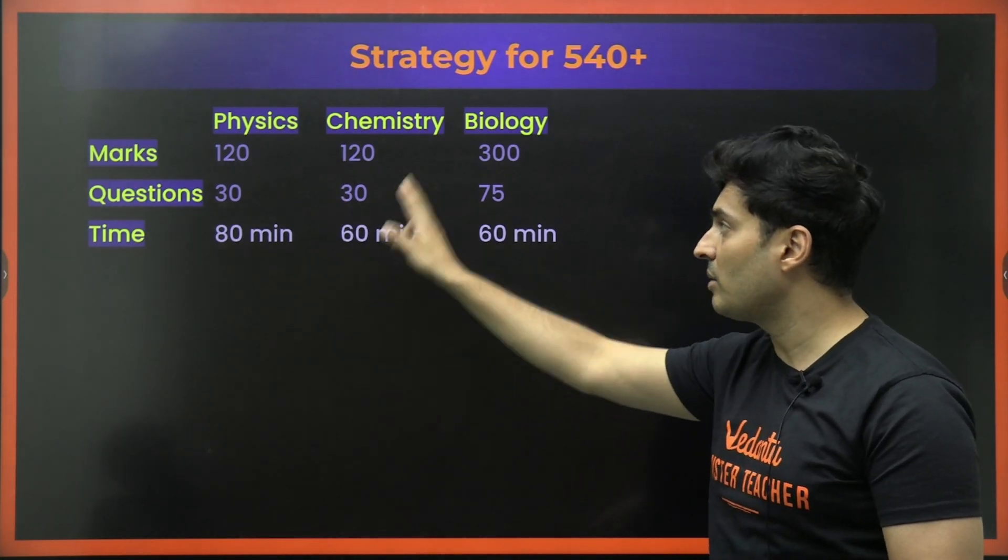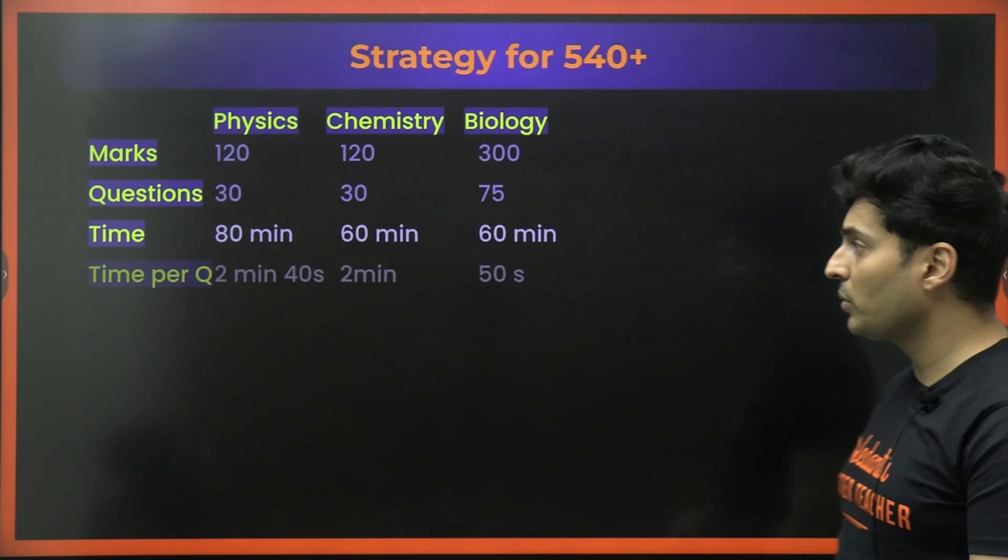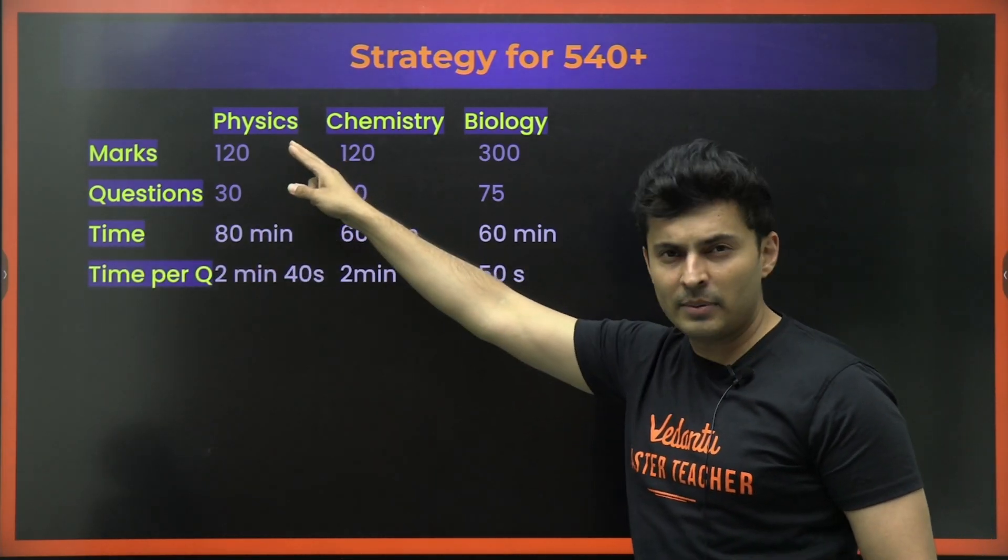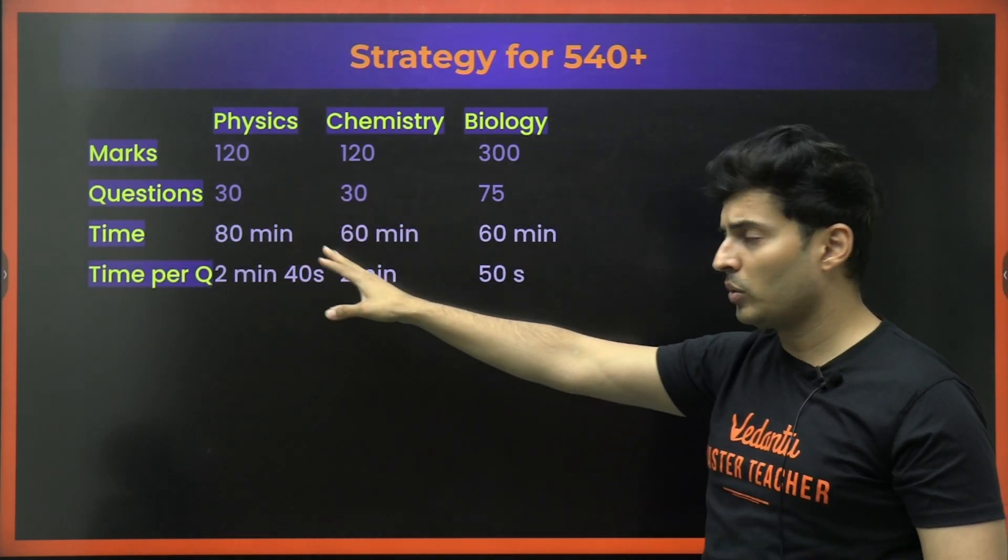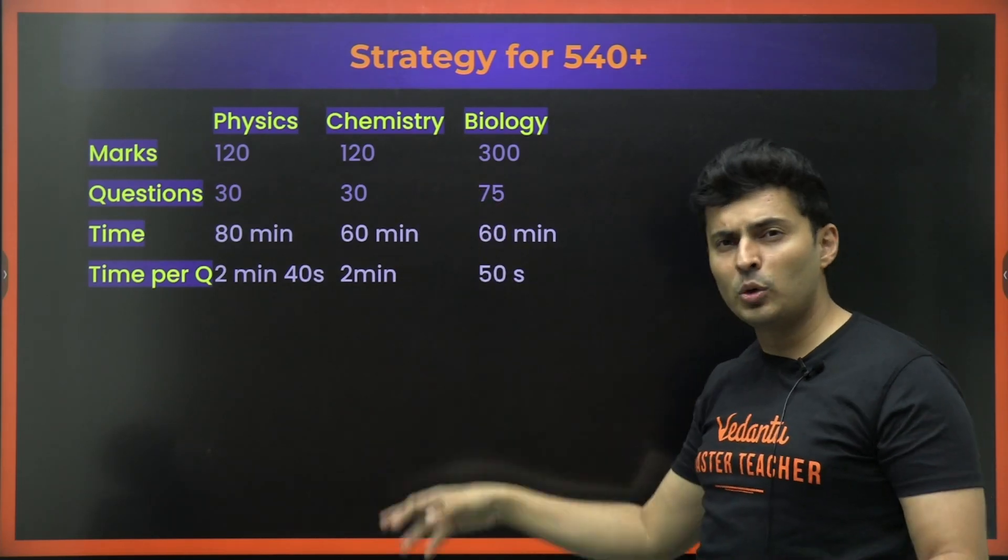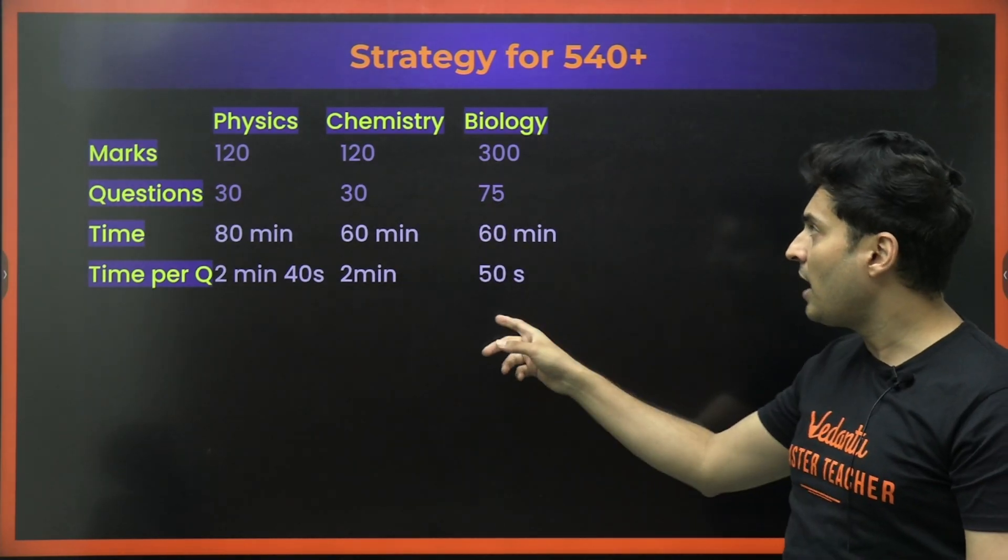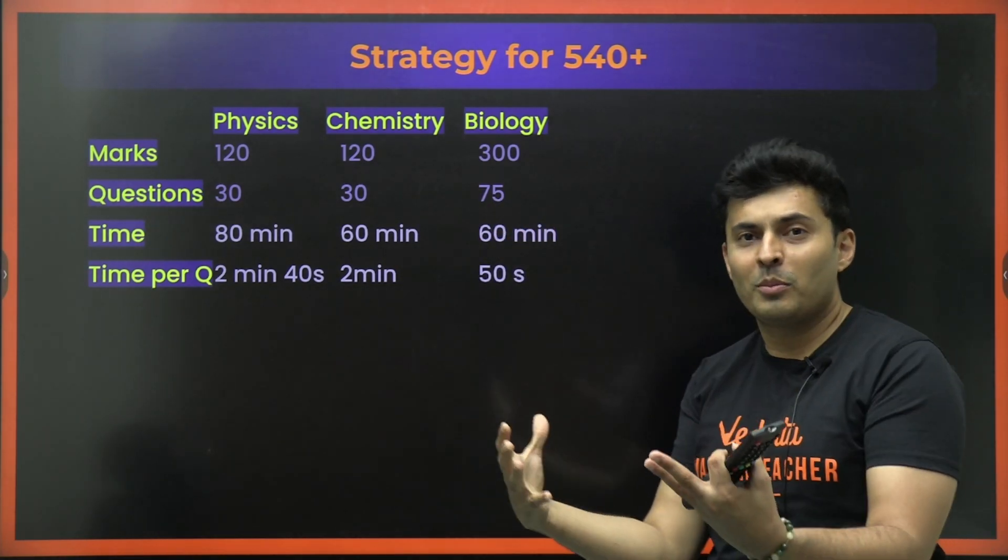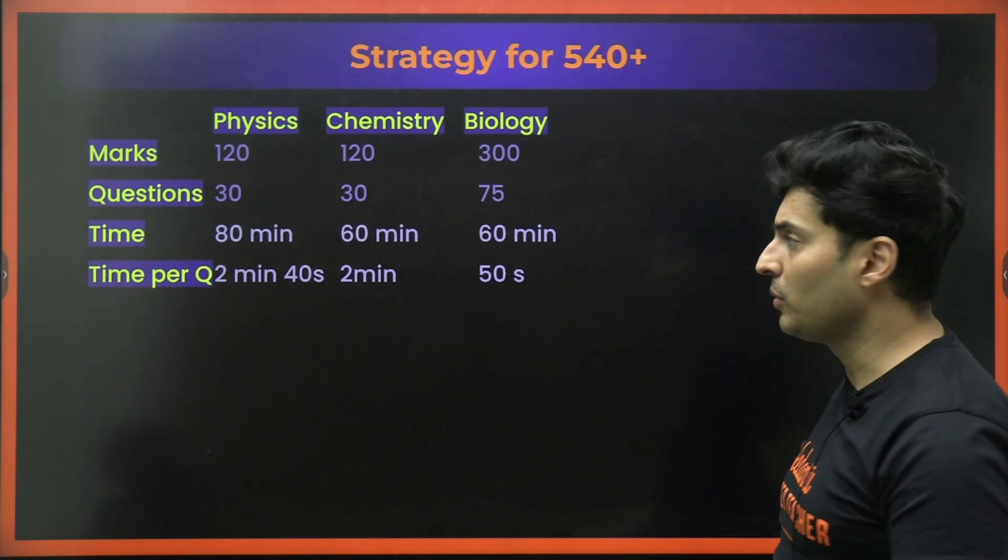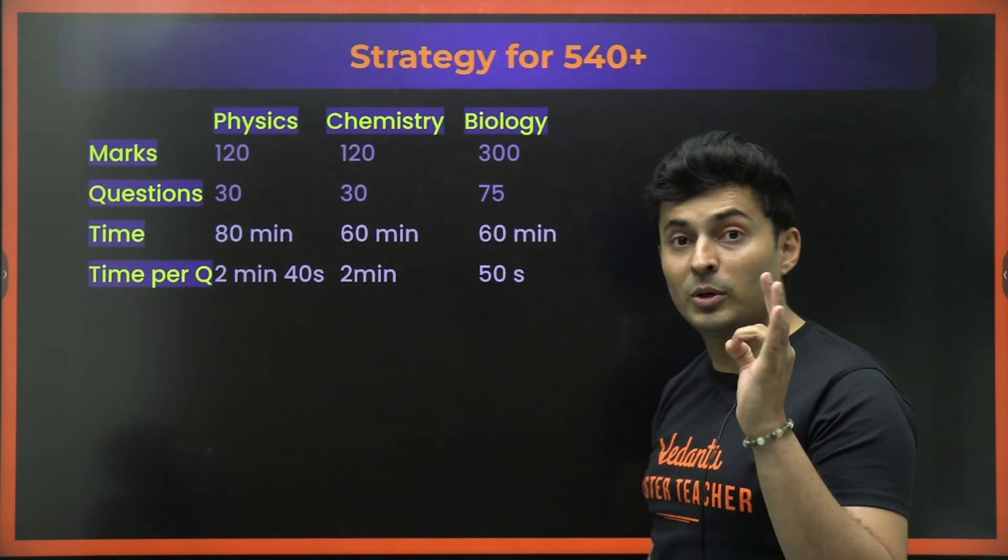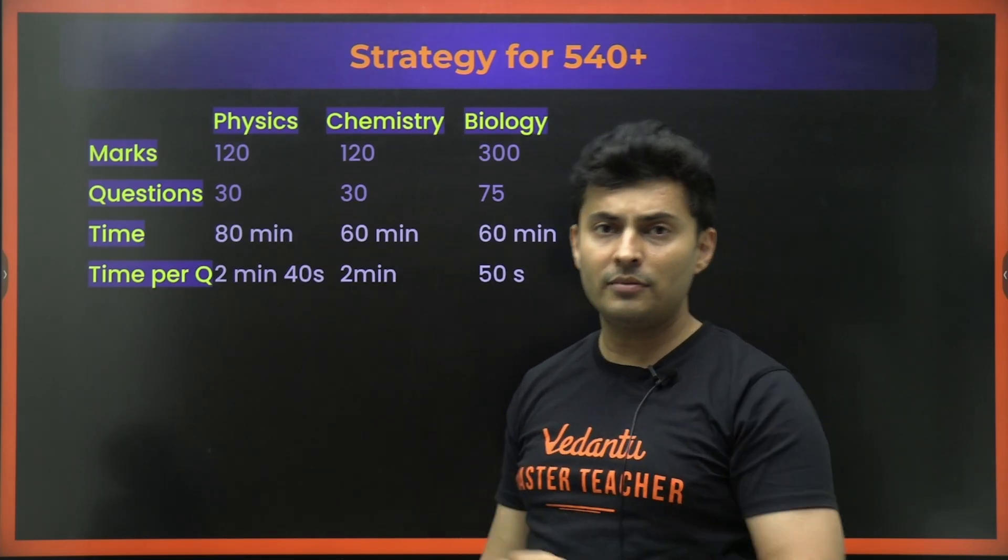80 minutes in physics, chemistry 60 minutes, biology 60 minutes. Per question, you take little bit more time in physics, that's perfectly okay, close to 3 minutes now and chemistry 2 minutes per question on an average and biology you can take little bit more time, let's say 50 seconds per question. So that is the strategy that you are going to apply for 540 plus.